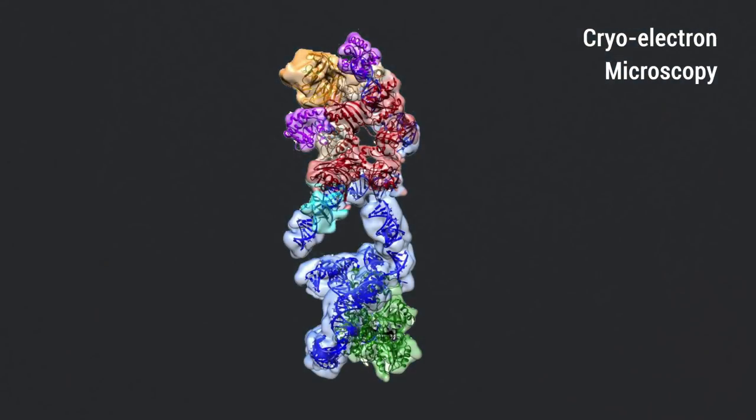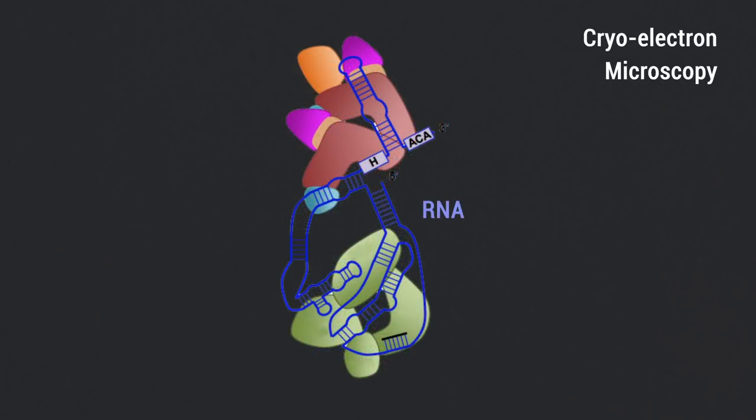In this study, we present the cryo-electron microscopy structure of substrate-bound human telomerase holoenzyme at sub-nanometer resolution, describing two flexibly RNA-tethered lobes: the catalytic core with telomerase reverse transcriptase and conserved motifs of telomerase RNA, and an H-ACA ribonucleoprotein.